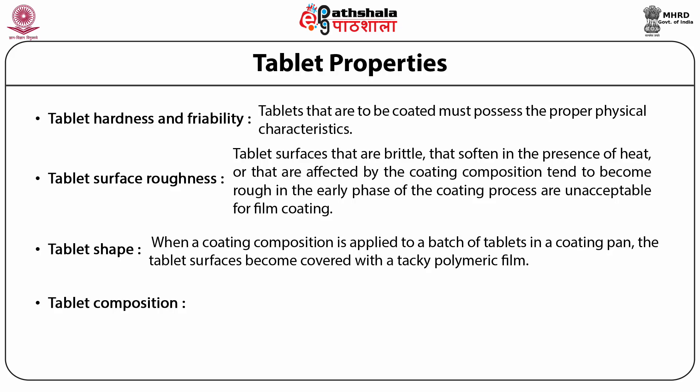The ideal tablet shape for coating is a sphere, which allows tablets to roll freely in the coating pan with minimum tablet-to-tablet contact. The worst shape is a square flat-face tablet, in which coating material would collect between the surfaces to glue them together. For this reason, coated tablets have rounded surfaces.